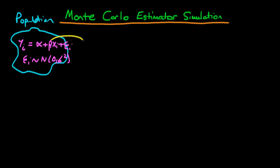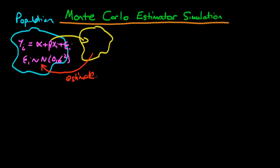Normally in econometrics we have a sample from that population, and what we'd quite like to do is use an estimator on that sample data in order to estimate the parameters of the population process. So we're trying to estimate alpha and beta in this particular example.